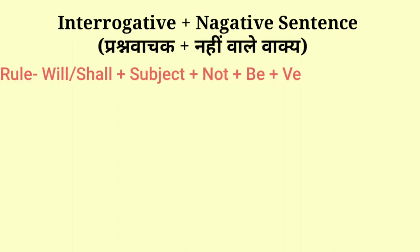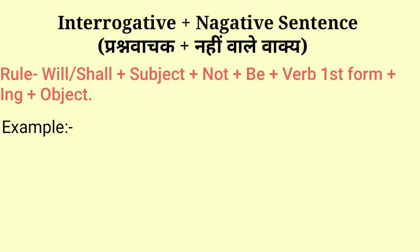Next is the interrogative plus negative sentence. Prashnavachak plus nahi wale vaakya. For making these sentences we use: Will / Shall + subject + not + be + verb first form + ing + object.